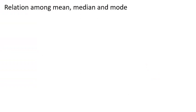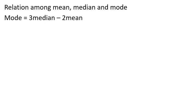Now let's discuss the relation among mean, median, and mode. The empirical relation is: Mode = 3 × Median minus 2 × Mean.